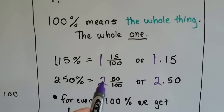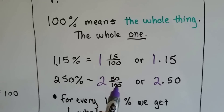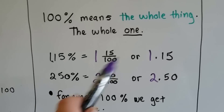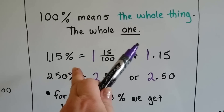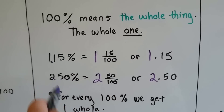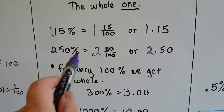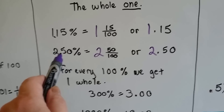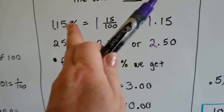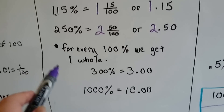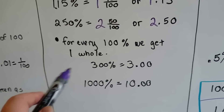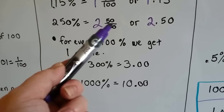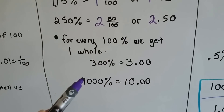Two hundred and fifty percent is two and fifty hundredths — two point five zero. Take away the percentage sign and put the decimal point there. When you see the percentage sign, you have to automatically imagine that there's an invisible decimal point there with no percentage sign. For every one hundred percent, we get one whole. Two hundred and fifty percent is two and fifty hundredths.